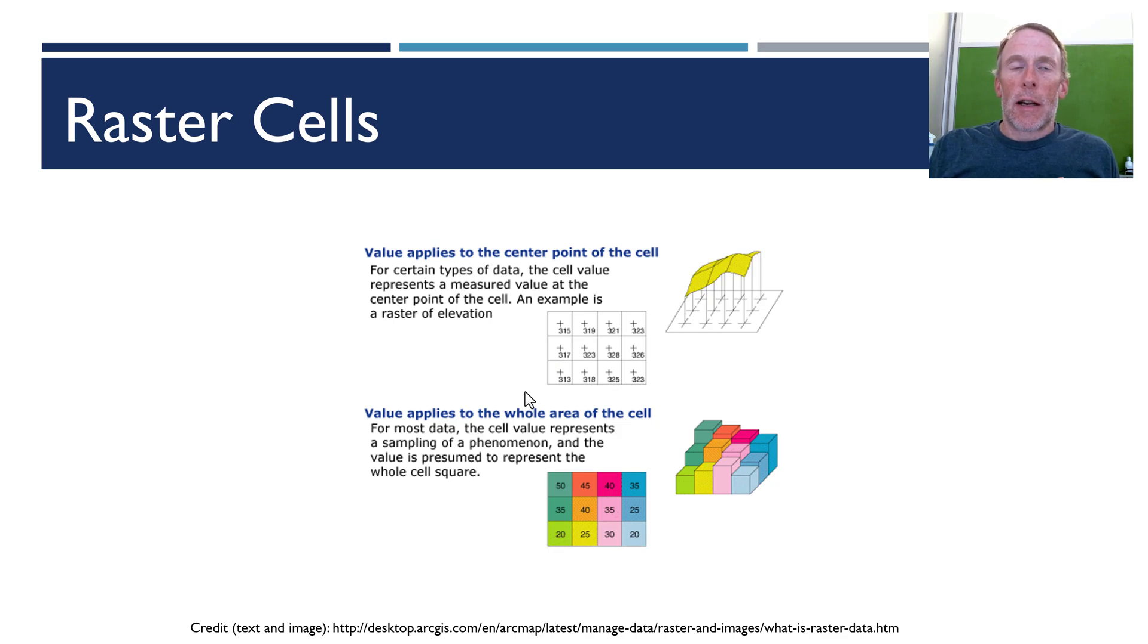This diagram just tries to relate to you that here in the upper images we've got a grid, a raster here, a grid of data where each cell has a center value that's been assigned an elevation, 315 meters, 319 and so forth.